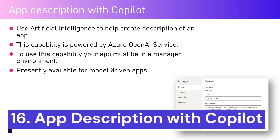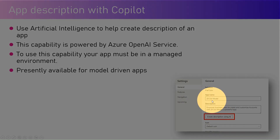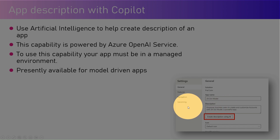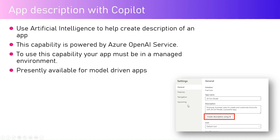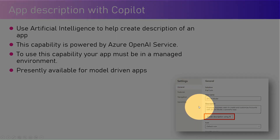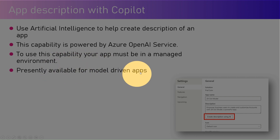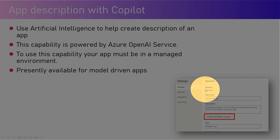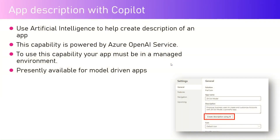App description with Copilot currently works only with model-driven apps. When you provision and publish a model-driven app, there is a button called 'Create description using AI.' It scans through the tables and controls within your model-driven app and generates descriptive text explaining the app's functionality. This capability is powered by Azure OpenAI Service. To use it, the app must be in a managed environment. Canvas apps do not currently have this AI description functionality.